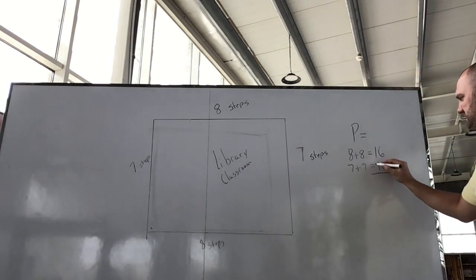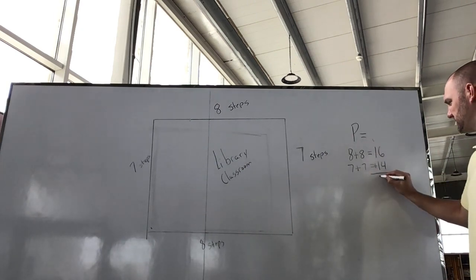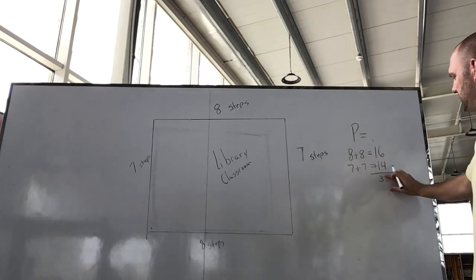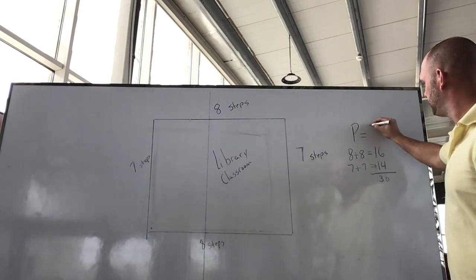Now we have to add those together. Six plus four is ten. Carry the one. Three, or one plus one is three. So we have a perimeter of three...